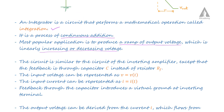Now the circuit is similar to the circuit of the inverting amplifier. Instead of RF resistor, we have C. The input voltage can be represented as V(T) and the input current as I(T).